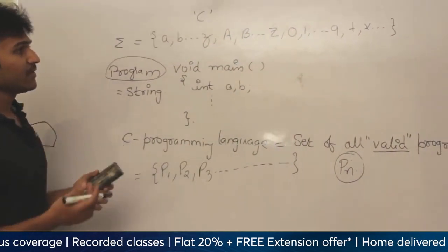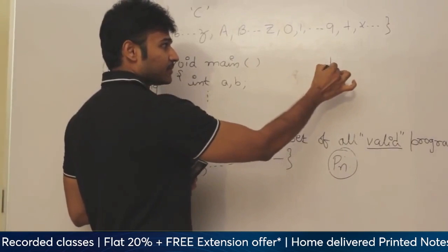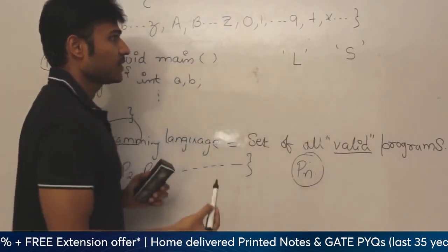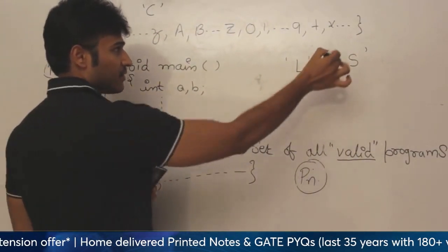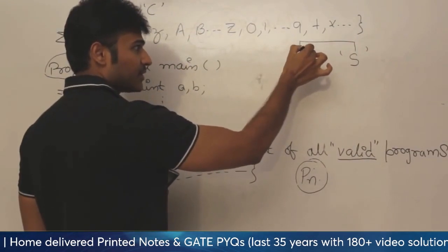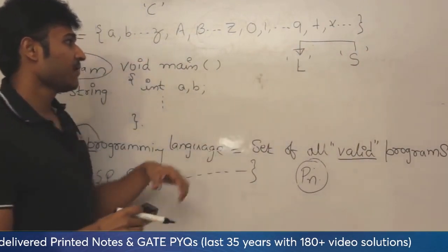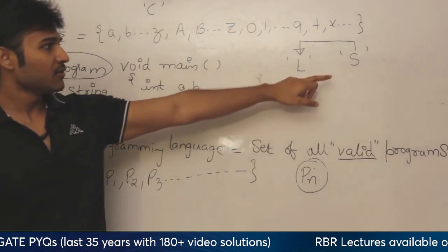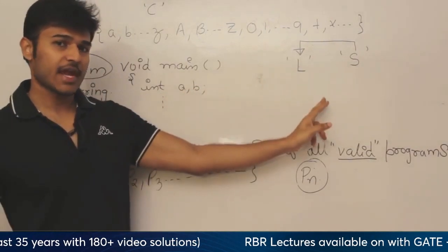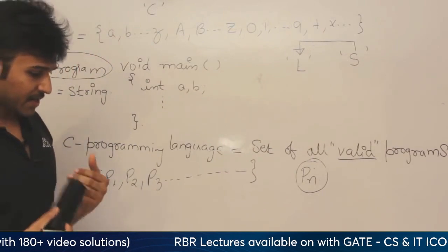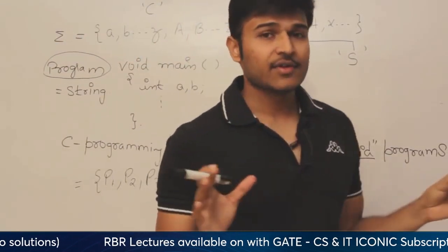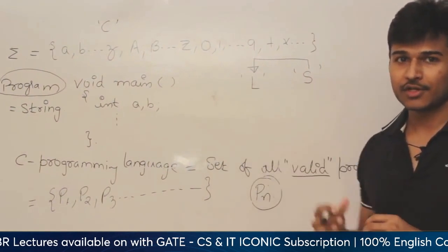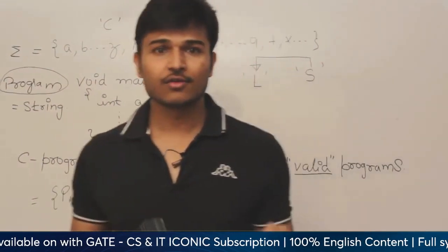So, we are mainly interested in this: given a language and a string, the interesting question is whether this string is present in this language or not. If the language is finite, yes, you can enumerate all the strings in memory, and then given a string, scan all the strings one by one and check if it is present or not. But if the language is infinite, obviously we cannot store all the strings in the language on a computer. Therefore, the entire thing boils down to a small point.